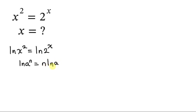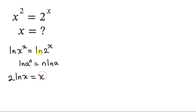So let's apply this law of logarithm to what we have on the left and on the right. Take the exponent which is 2 and multiply by ln(x), so 2·ln(x). Equal to — take the exponent which is x and multiply by ln(2), so x·ln(2).